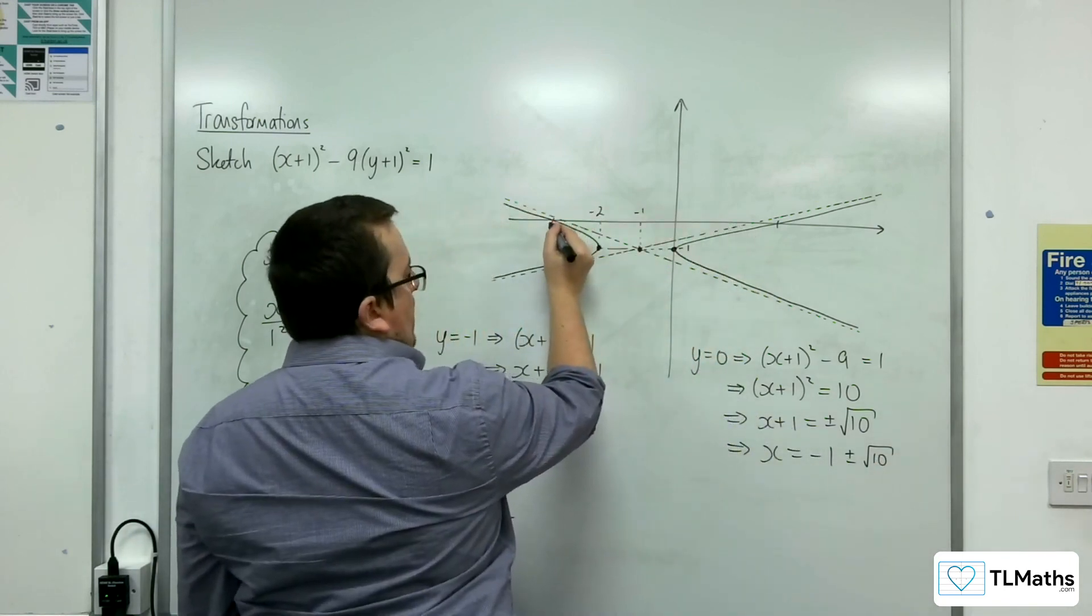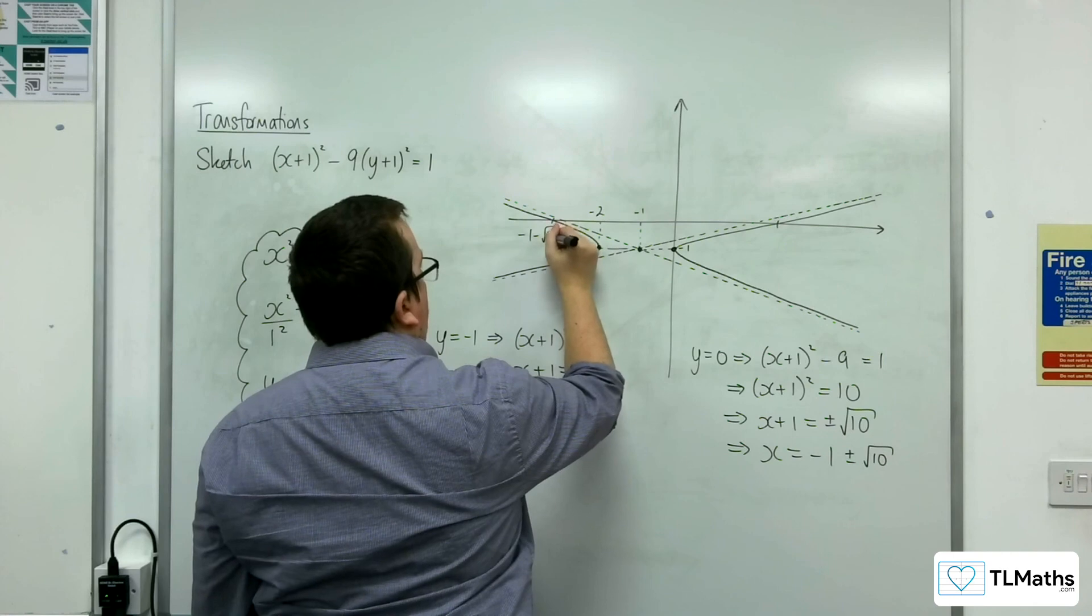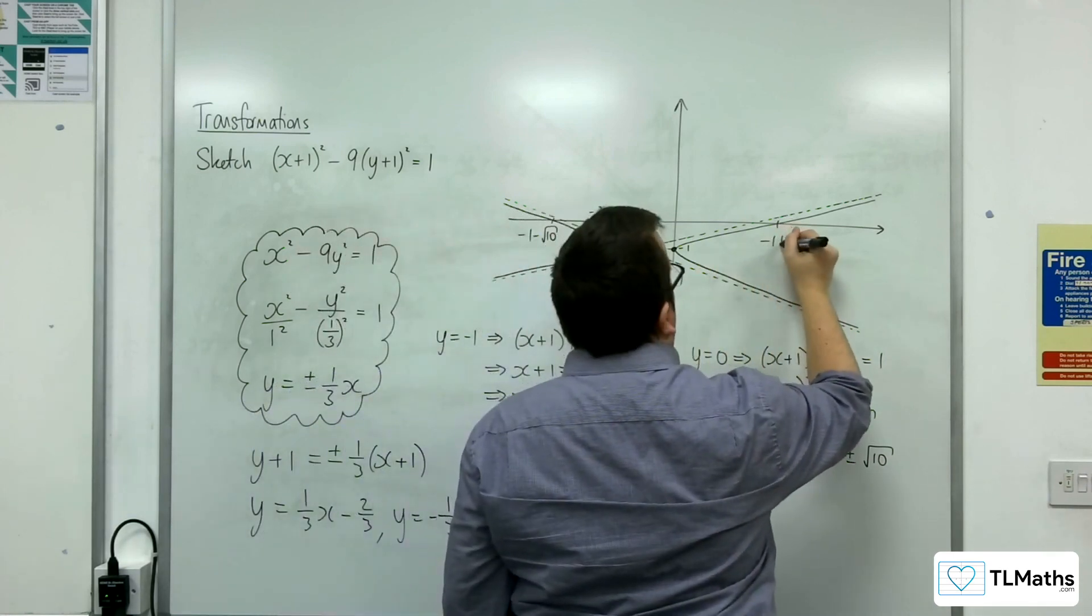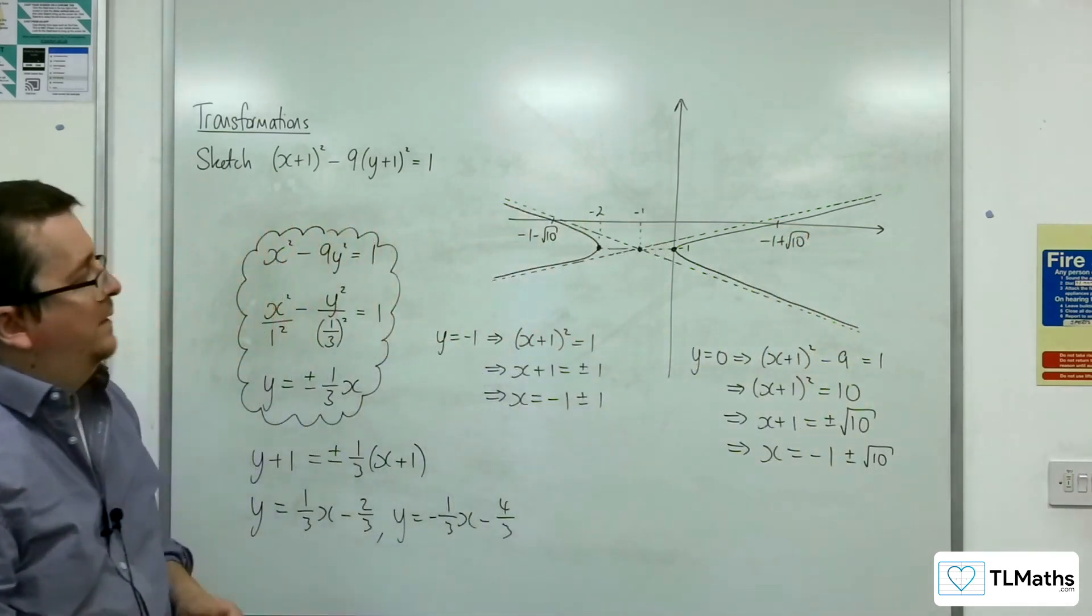And so x is going to be equal to -1 ± √10. So this point here will be -1 - √10. And this point will be -1 + √10.